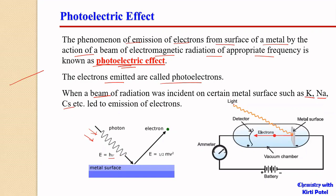In this setup, radiation or light falls on a metal surface. The electrons ejected from the surface are attracted toward an anode or positive electrode. These electrons strike the positive electrode, flow through the circuit, and hence electric current can be obtained and detected. These ejected electrons are called photoelectric electrons.